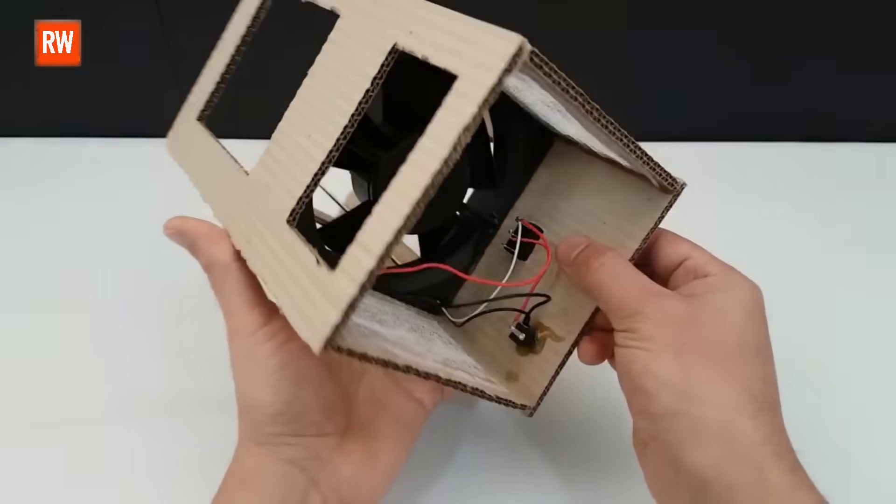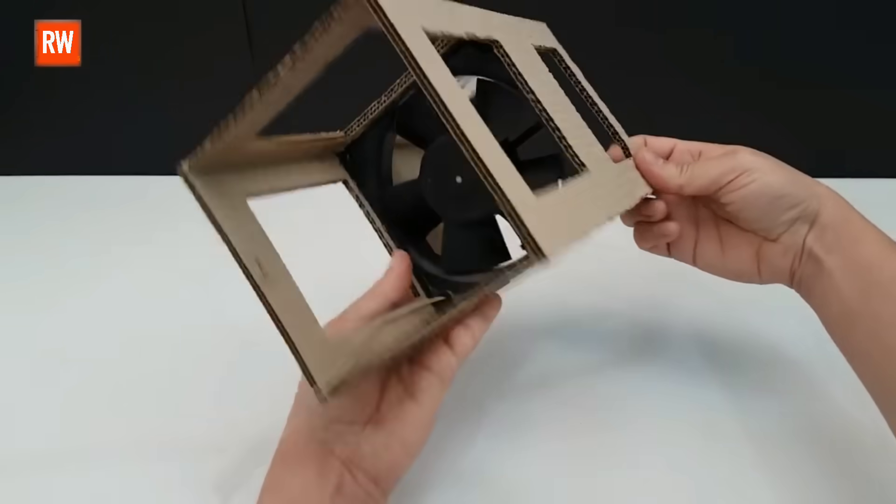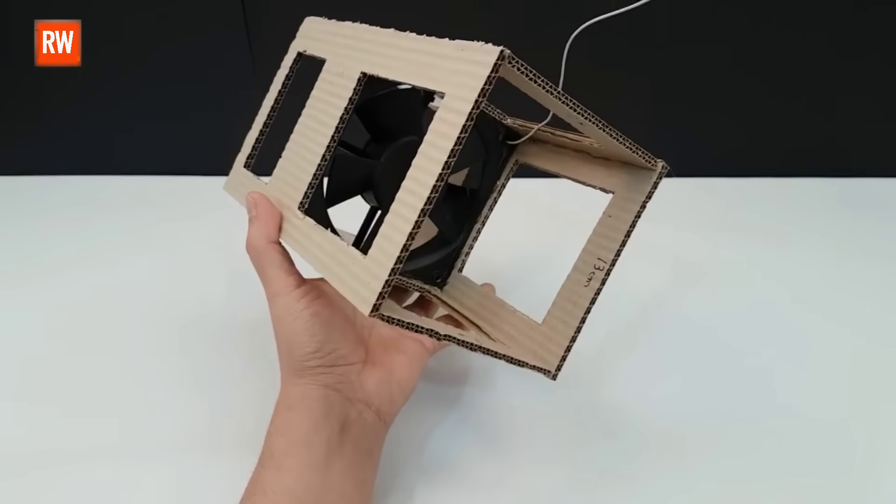Friends, it's very important to apply the hot glue properly and carefully at this stage. When working with cardboard, if the glue isn't applied evenly or in the right amount, the joints can come loose over time.